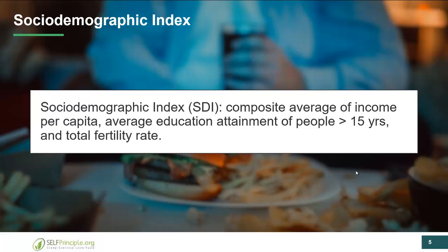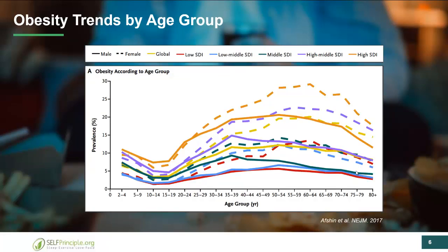One key data point in this study is the SDI, or Social Demographic Index. SDI is an average of income per capita, the education of people, and the total fertility rate. It's a great way to look at countries that have more development than others — higher income countries generally have a higher SDI.